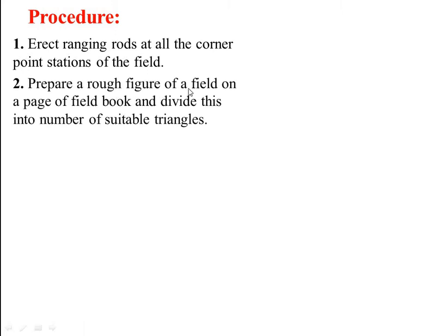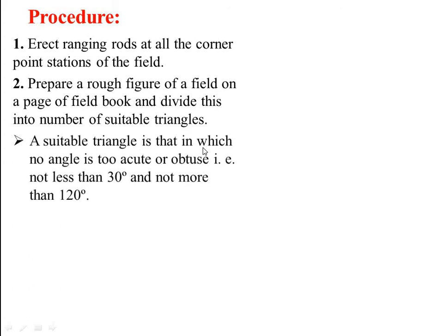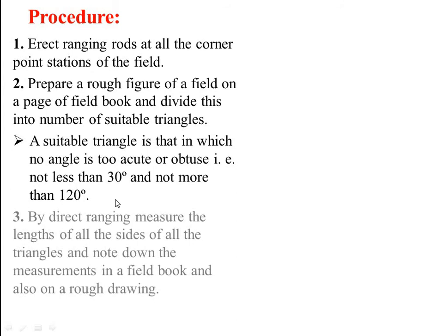Procedure: First, erect ranging rods at all the corner point stations of the field. Second, prepare a rough figure of a field on a page of field book and divide this into number of suitable triangles. A suitable triangle is that in which no angle is too acute or obtuse, that is not less than 30 degrees and not more than 120 degrees. Third, by direct ranging measure the length of all sides of all the triangles and note down the measurements in a field book and also on a rough drawing.